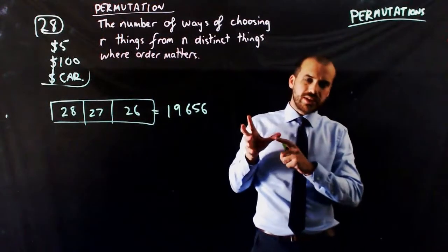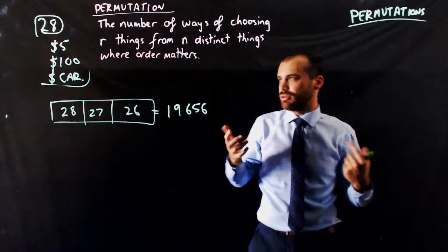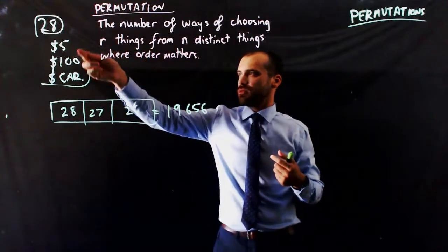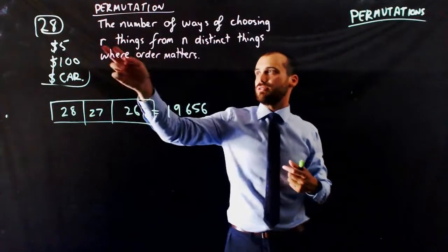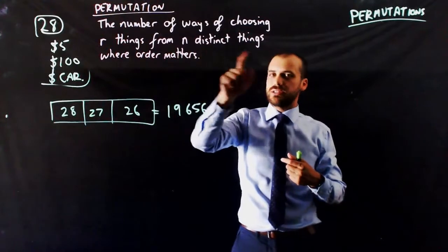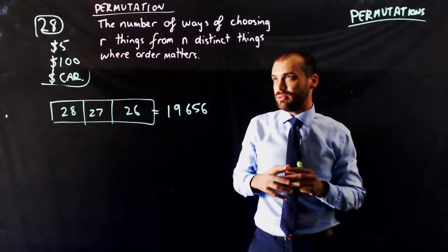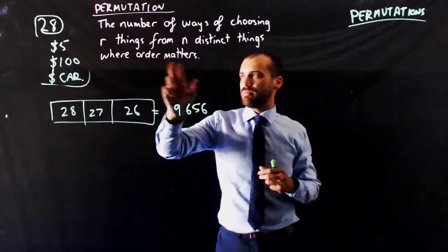There are some important parts of that definition that we're going to get to play with later on. The r things, in this case, were the people. Three people. The way of choosing three people from n distinct things, there are 28 distinct people. And importantly, order matters.